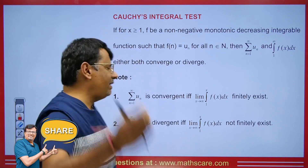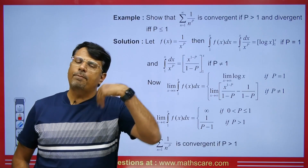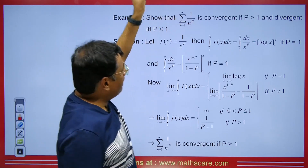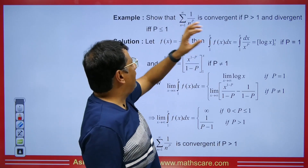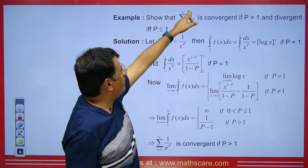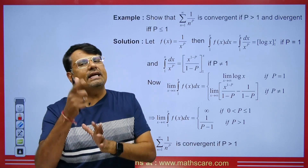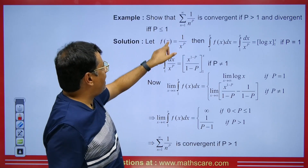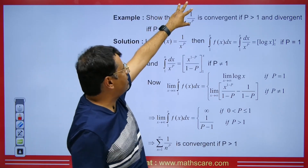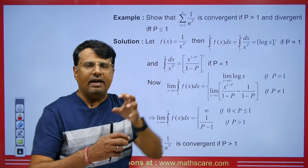Now I will give you some examples. The P-series test is at times asked in exams where we need to prove that the series — summation n=1 to infinity of 1/n^p — is convergent for P greater than 1, while it diverges for P less than or equal to 1. We have F(n) = 1/n^p. This is monotonically decreasing, positive, and integrable. We keep n as x, so F(x) = 1/x^p, and this series depends on the limit as x tends to infinity of the integral from 1 to x of F(x) dx.